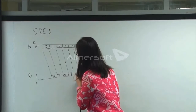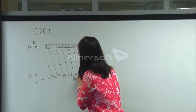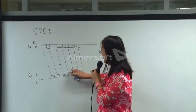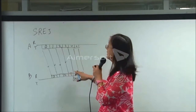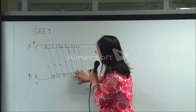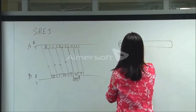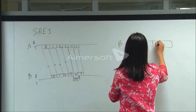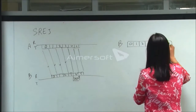For go-back-N, we will throw away frames 4 and 5, because we didn't get frame number 3 correctly. But for selective reject, we will keep frames 4 and 5. So at the receiver B, we keep 0, 1, 2, and also frames 4 and 5 — it will not throw frames 4 and 5 away.